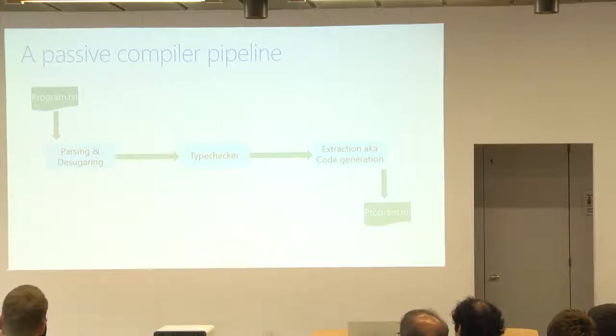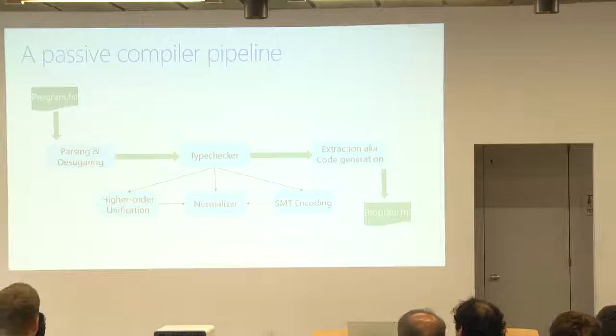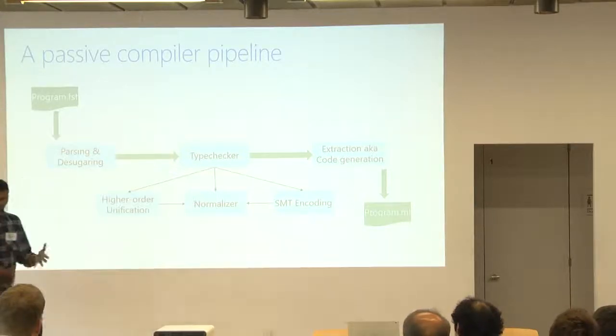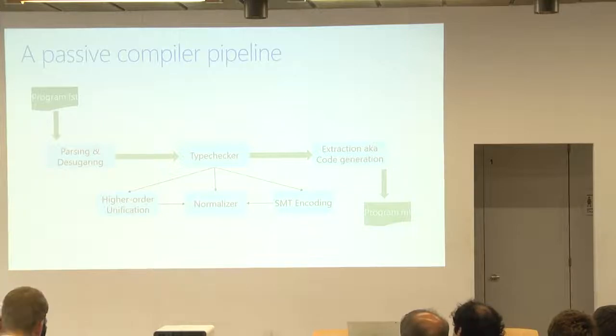So, in a nutshell, here's how I see the idea. Compilers have pipelines, and here's a typical passive compiler pipeline for a verification tool like F-star, where you write a source program, it's parsed and desugared, it's type-checked, and then you get some code generation at the back. And in the case of F-star, and as in many dependent type systems, the type-checker itself has several components. There's higher order unification, there's a normalizer. Dependent type theory is a lot about computation, so the type-checker includes a computation engine in it. And in the case of F-star, there's also an SMT encoding that can encode F-star's logic to SMT.